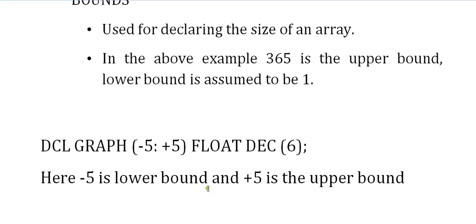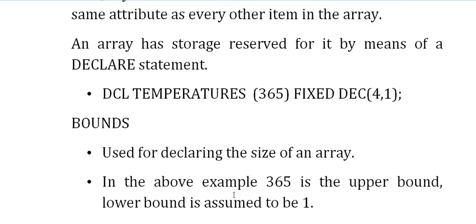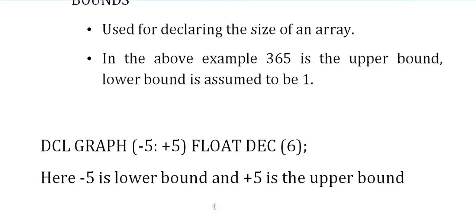If you want to define a specific lower bound and upper bound while declaring, you can define something like: DCL graph (-5:+5) and the data type is decimal(6). In this case, your lower bound is -5 and the upper bound is +5. It means your array indexing starts from minus 5 — graph(-5) equals some value, graph(-4) equals some value, and so on up to +5. This is something different from array declaration in any other programming language, as here we are concerned about both upper bound and lower bound.